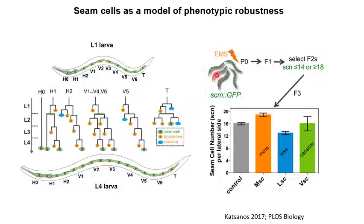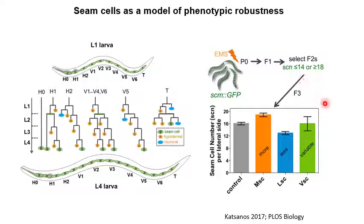We carried out a forward genetic screen where we used EMS to mutagenize the worms. We had a reporter for seam cells — a seam cell GFP — and then we looked for mutant animals that either had more, less, or variable seam cell phenotypes. Seam cell screens are not saturated, so we can uncover novel candidates of seam cell regulation. Today I'm going to focus on two genes we identified that are highly conserved across the animal kingdom and may have novel mechanisms in modulating phenotypic robustness of the seam cells.